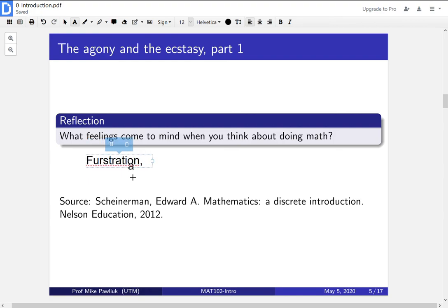So some words people might say are frustration, challenge. Some people might say fun. What about joy. The words that the author Edward A. Shinerman uses are agony and ecstasy. So you can think of the other words that you would add.